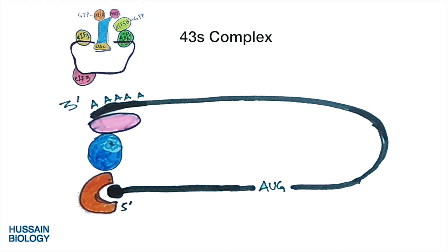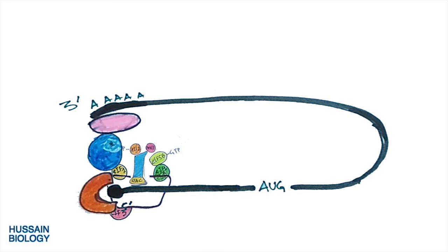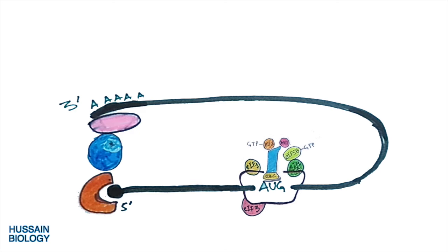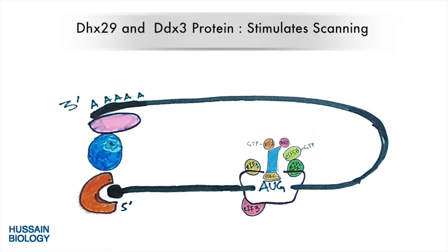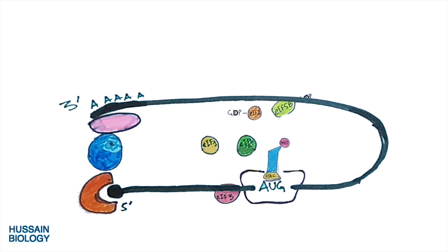After that, the 43S pre-initiation complex binds with the mRNA molecule at the 5' end towards the 7-methylguanosine cap, forming the 48S complex. Scanning then takes place, where the 43S complex scans for the AUG initiation codon within the Kozak sequence of mRNA. Scanning is stimulated by DHX29 and DDX3 proteins. Upon recognition of the AUG codon, GTP hydrolysis takes place — all GTP-bound factors are hydrolyzed and leave the 48S complex, as shown in the animation.